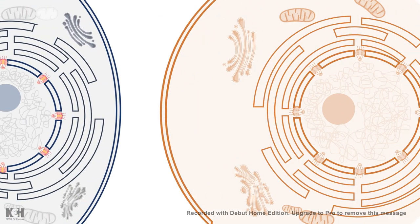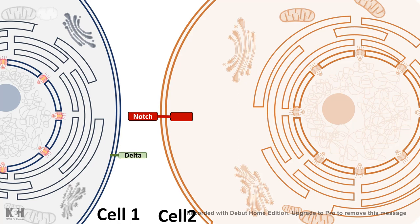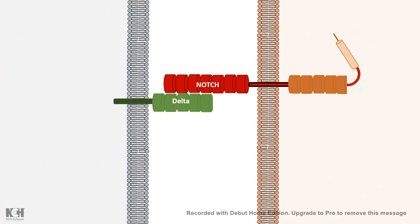Notch signaling, unlike other signaling, is very different because it is an intercellular signaling — it involves two cells. One cell would express Notch, which you can think of as an extracellular receptor, and the other cell would express the ligand, known as Delta. Delta is very different from other soluble ligands: Delta is a transmembrane protein, a membrane-bound ligand, not a soluble ligand. The first step of the signaling is interaction between this receptor and ligand — that means interaction between Notch and Delta.